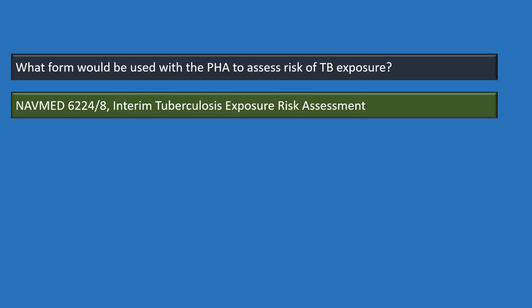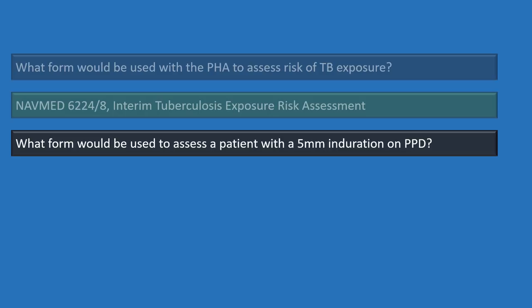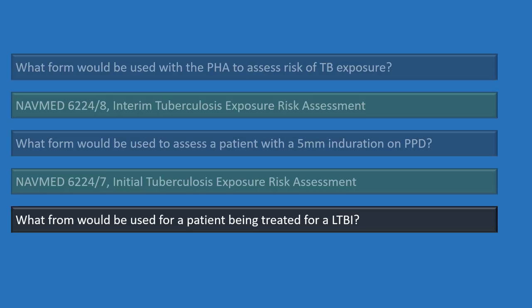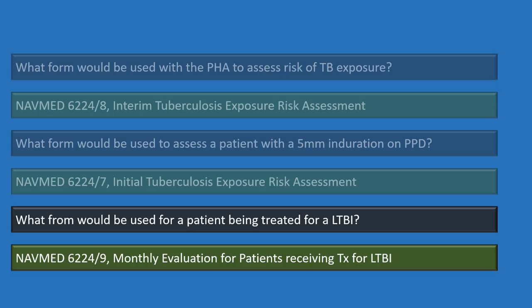For a patient with five millimeters of induration on a PPD, use NAVMED 6224 Slant 7 — the initial tuberculosis exposure risk assessment. For a patient being treated for latent tuberculosis infection, use NAVMED 6224 Slant 9 — the monthly evaluation for patients receiving treatment for latent tuberculosis infection.